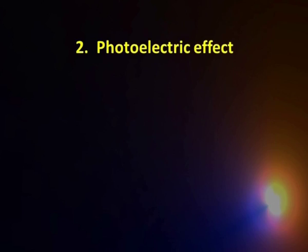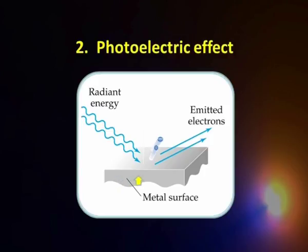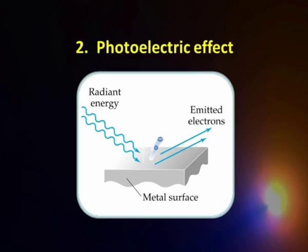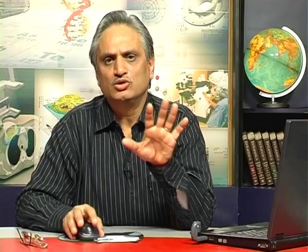Now let us move on to the second experiment: the photoelectric effect, another very important experiment which posed a serious challenge to classical mechanics. Suppose we take a soft metal like cesium and throw some light on it. What we observe is that when light falls on the metal, it emits electrons; if we keep throwing light, electrons keep coming out and constitute a current. Such an effect, where electrical current is produced as a consequence of light, is called the photoelectric effect, and the emitted electrons are called photoelectrons.